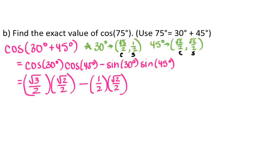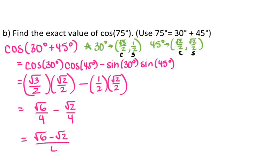So I can simplify my expression — that gives me root 6 over 4, minus root 2 over 4, which I can combine to give me root 6 minus root 2 over 4. Now it's just a coincidence that both of these questions gave you the same exact answer, but yeah, it just worked out that way.